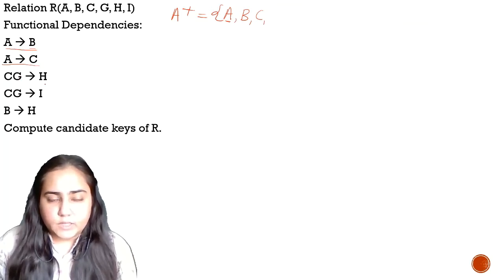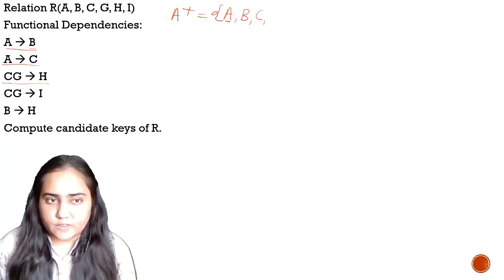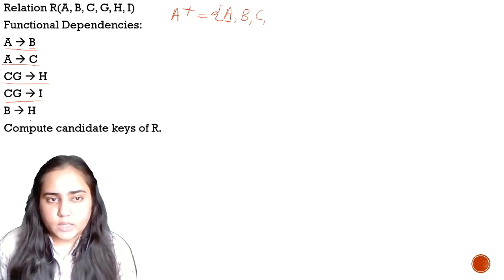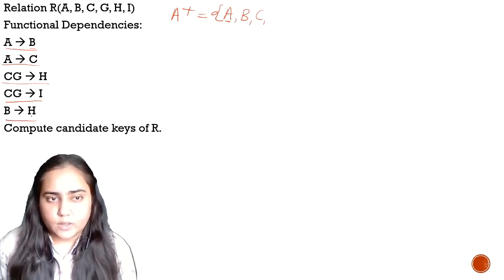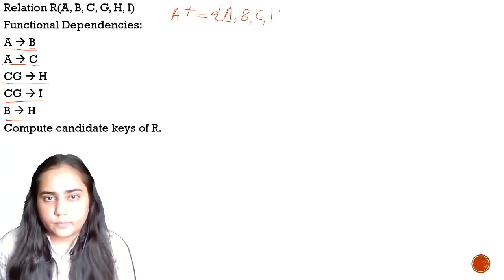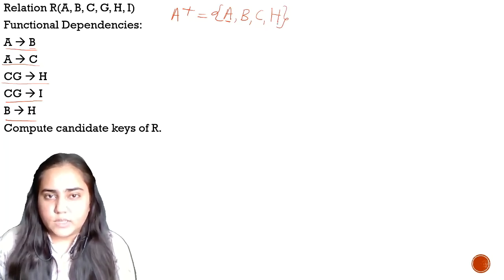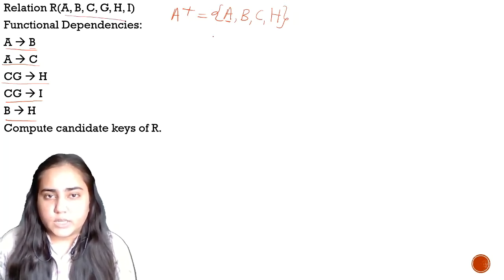The next functional dependency is A determines C. A is present in our set, so we can add C. The next dependency is C G determines H, but we do not have both C and G in our set — we have C but not G, so we cannot add H. Same is true for C G determines I; we don't have both, so we cannot add I. The last one is B determines H. Because we have B in our set, we can add H. So this is what A-plus, the closure of A, looks like.